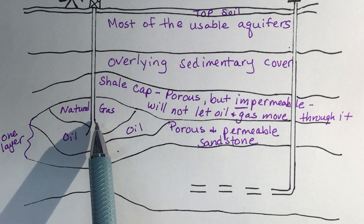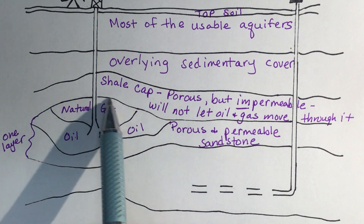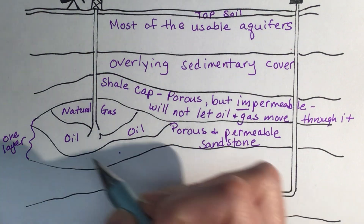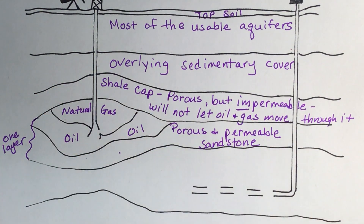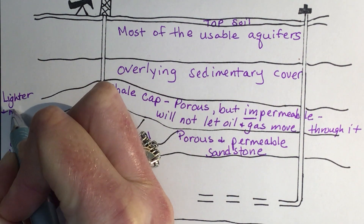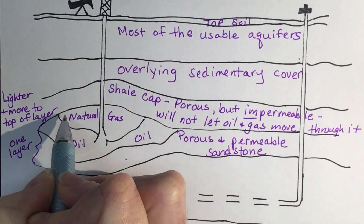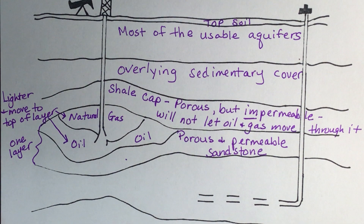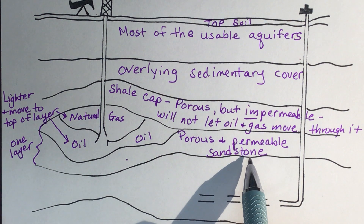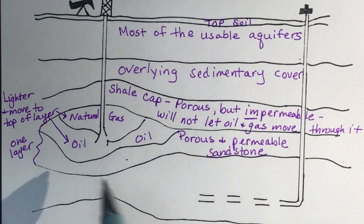Because oil and gas are lighter in density, they rise to the top of the layer — to the highest place in that layer. Natural gas is less dense than oil, so it moves to the very top. Both oil and gas move through the porous and permeable sandstone and then accumulate at the highest point of that layer.